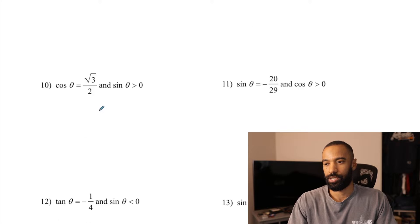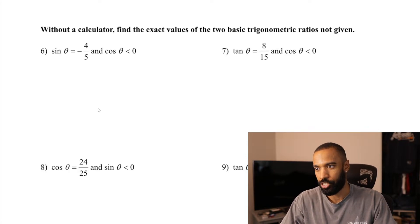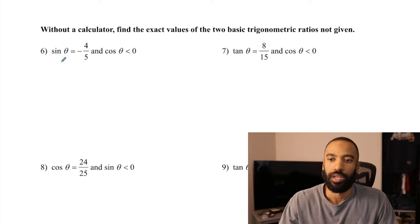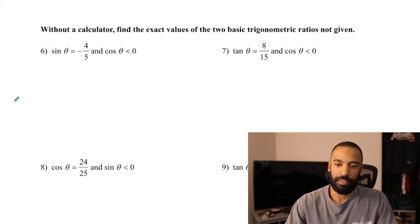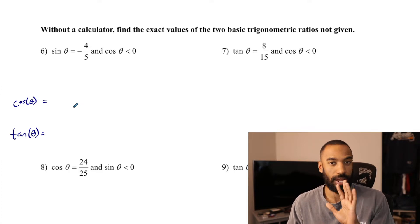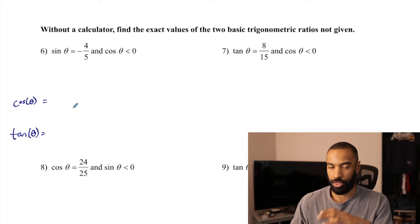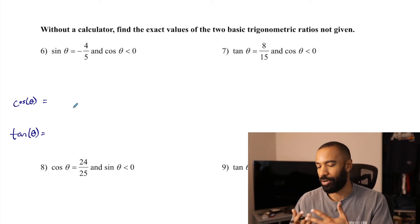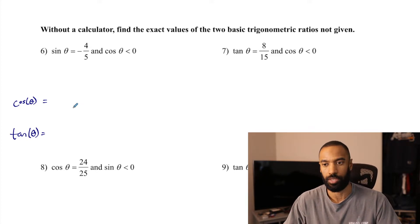Those are the calculator problems. These were ratios not from special angles — not root 3 over 2, or 1/2, or root 2 over 2. The next eight problems will be. Without a calculator, find the exact values of the two basic trig functions not given. These are fractions, and we can use those values with Pythagorean theorem to find the third value. These aren't necessarily 30-60-90 triangles.